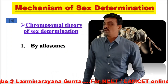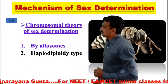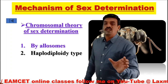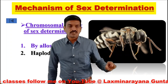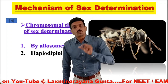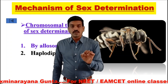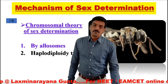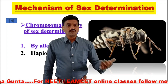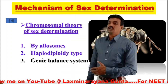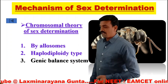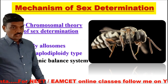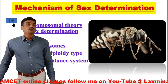This type of sex determination is by allosomes. There is also the haplodiploidy type of sex determination, which we can observe in honeybees, bats, and ants, where haploids are always males and diploids are always females. For example, a honeybee with 32 chromosomes, which is diploid, is a female; a honeybee with 16 chromosomes is male because it is haploid. The genic balance system, discovered by Bridges in Drosophila melanogaster, will be discussed in our next lesson. This concludes the chromosomal theory of sex determination.